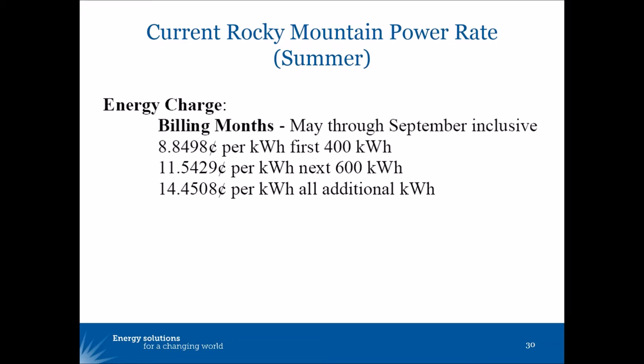But if they go above 400 kilowatt hours, up to 1,000 hours, they pay a higher 11.5 cent charge. And if they go above 1,000 kilowatt hours, they pay an even higher charge. That's a typical inclining block rate, and it is not incompatible with having a time of use rate.